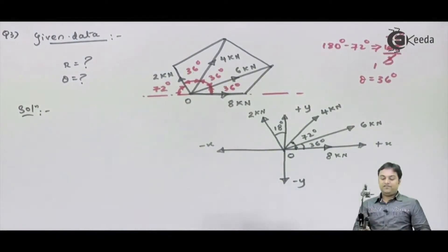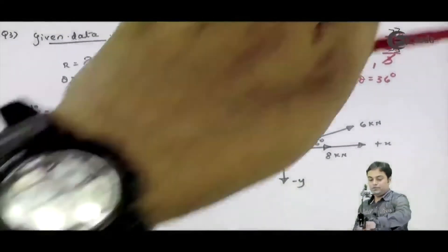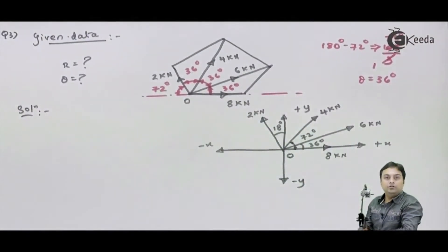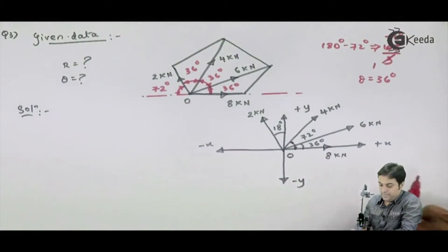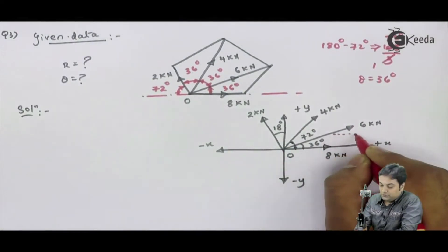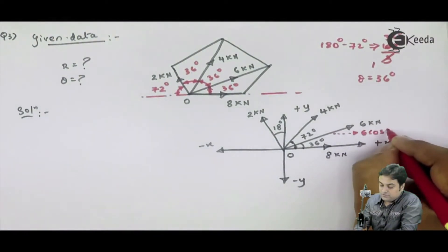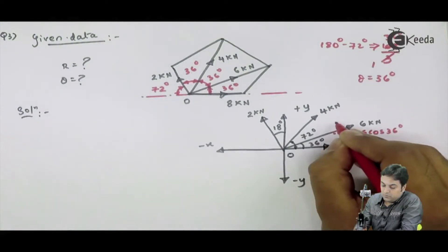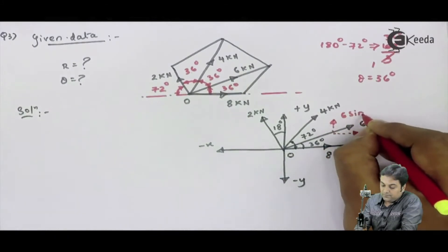I have now converted the pentagon problem into a concurrent force system. The next step is to resolve all the forces. 8 kN is perfectly horizontal — no need to resolve it. 6 kN is inclined at 36° with horizontal, so its horizontal component is 6 cos 36° and its vertical component is 6 sin 36°.